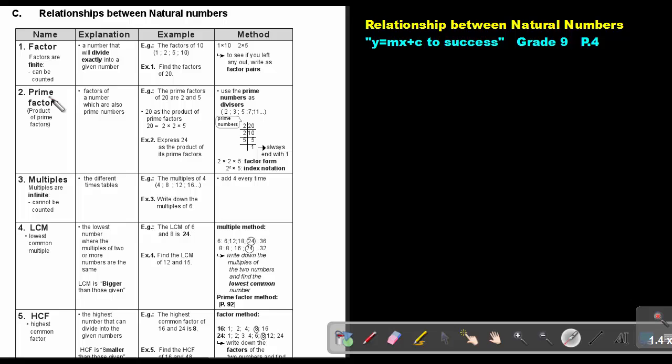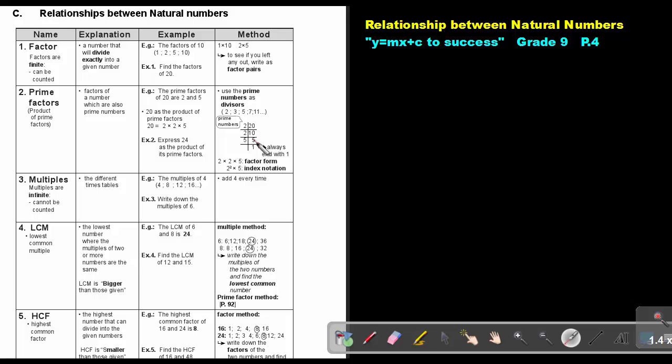Let's go to prime factors. Factors of a number which are also prime numbers. So if I say the prime factors of 20, use the prime numbers as divisors. Write the 20 and start with the first prime number. So 20 divided by 2, that's 10. Continue with that 2. So 10 divided by 2, that's 5. 5 divided, can 3 divide? No, but 5 can. 5 divided by 5, that's 1. Always end with a 1.